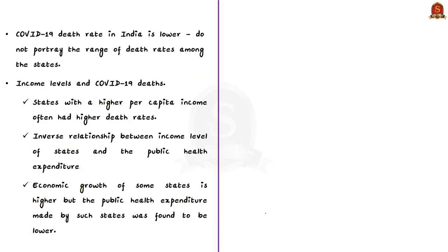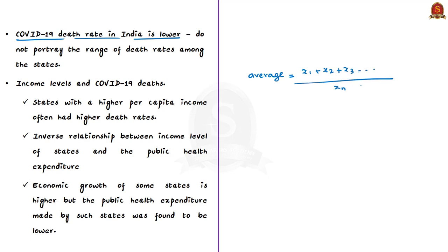At the outset of the COVID-19 pandemic, it was frequently reported that COVID-19 death rates in India were lower compared to other parts of the world. At the national level, this death rate is an average that will not portray the range of death rates among the states — it hides the maximum and minimum death rates. The authors attempted to find an answer to this variation. They looked for a relationship between income levels and COVID-19 deaths, and found that states with higher per capita income often had higher death rates.